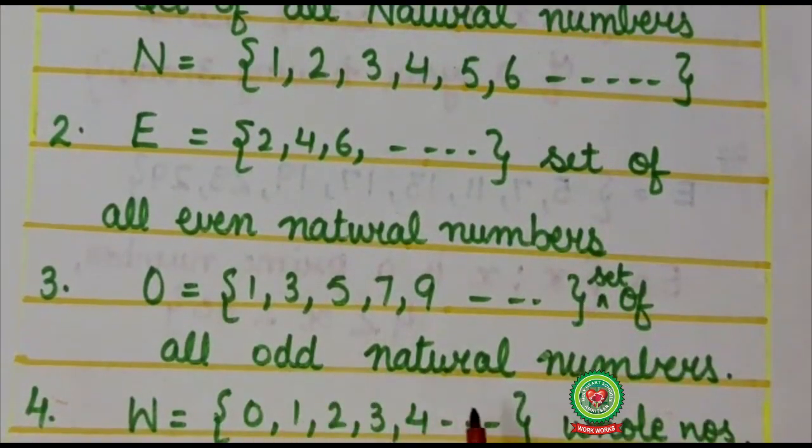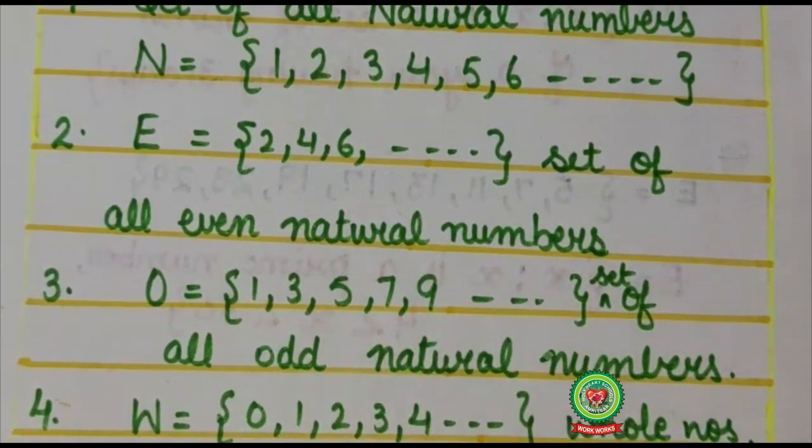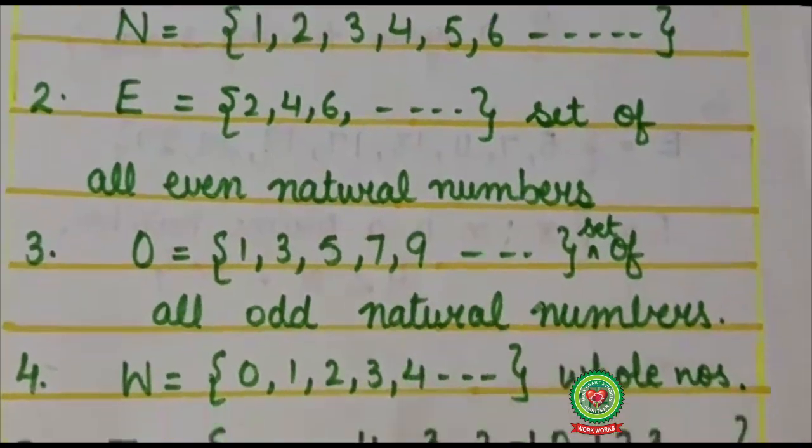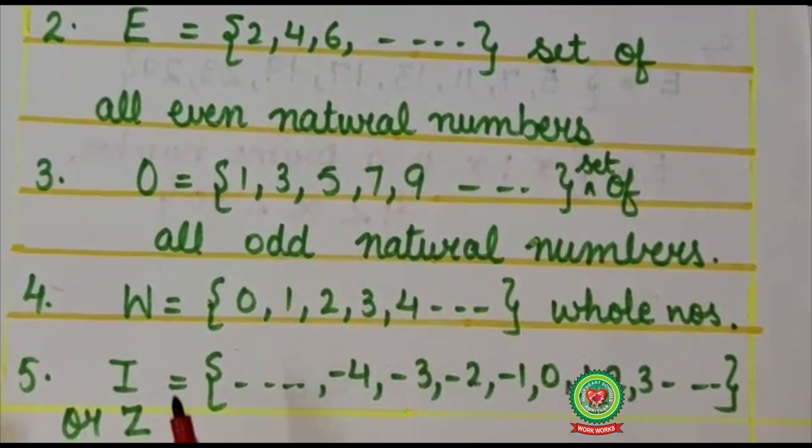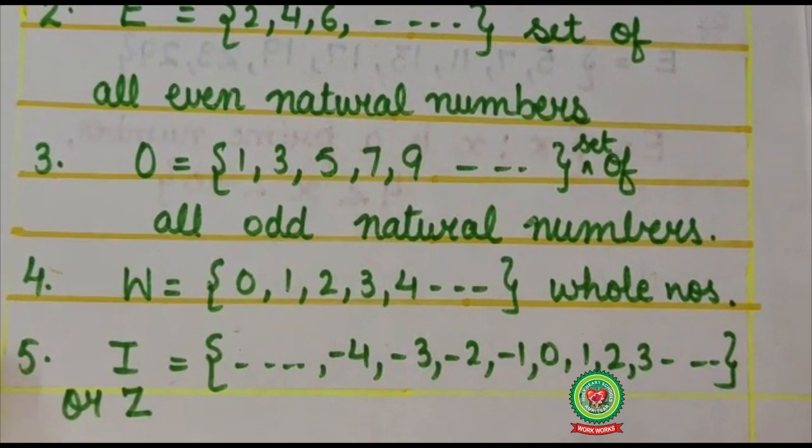Similarly, O set of all odd natural numbers {1, 3, 5, 7, 9, so on}. So here also listing is endless. Therefore, it is also an infinite set. Similarly, we are having whole numbers and set of integers which are also infinite sets.